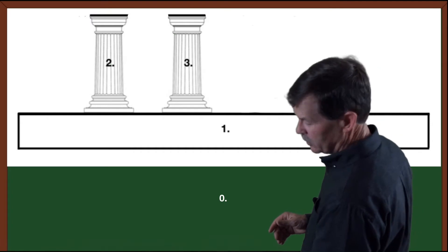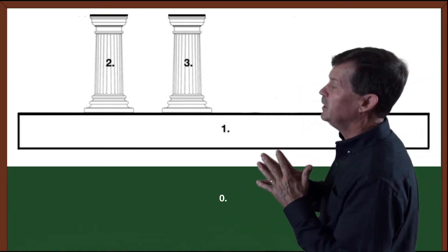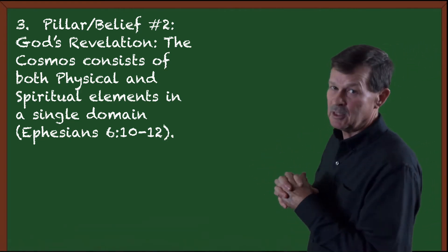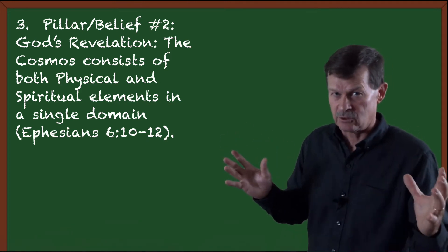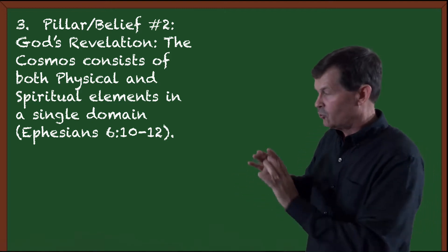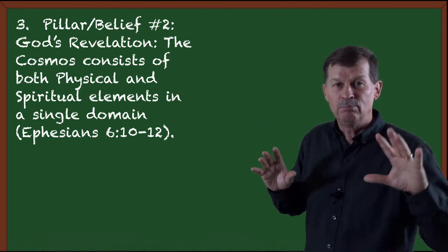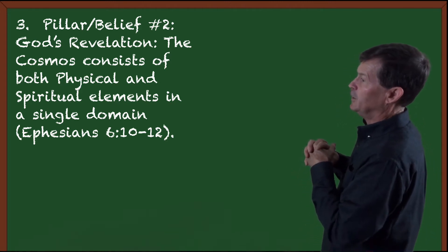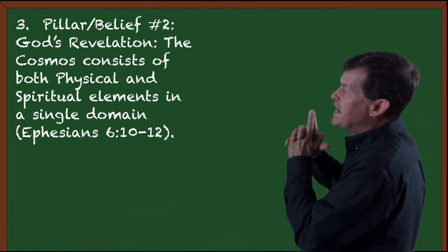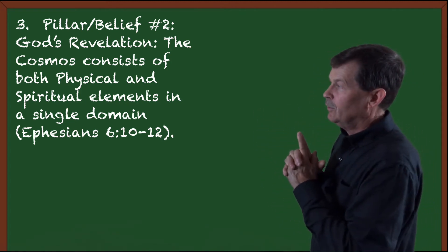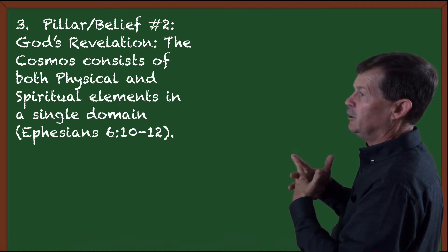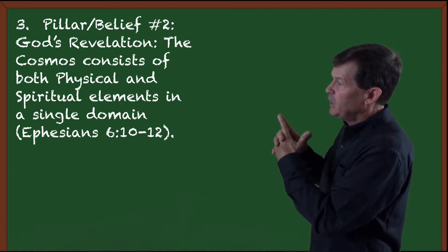Second column. What does that represent? The second column represents the belief, based on the revelation, God's revelation, that the cosmos consists of both physical and spiritual elements. So the first one was domains. Are there two domains? No, there are not. There's only one domain, and it is occupied by both physical and spiritual dimensions. This one is talking about elements. What exists in this belief that comes from the Scriptures is the cosmos consists of both physical and spiritual elements in a single domain.